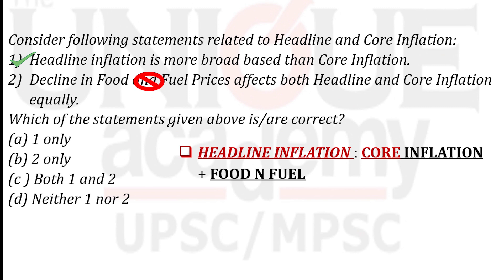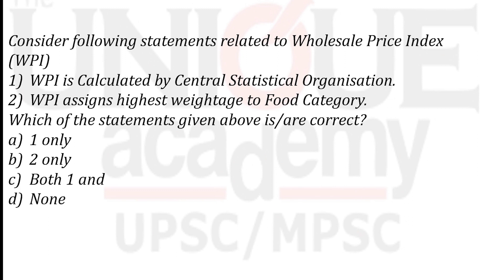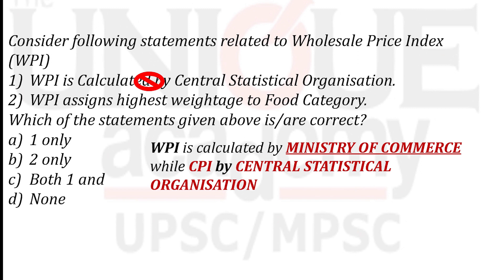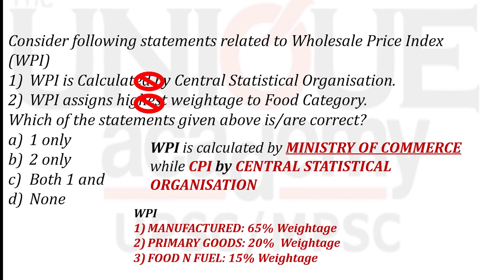Second question is about WPI. Statement 1: 'WPI is calculated by the CSO.' This is incorrect — WPI is calculated by the Ministry of Commerce, while CPI is calculated by the CSO. Statement 2: 'WPI assigns the highest weightage to food categories.' This is also incorrect — WPI gives the highest weightage (65%) to manufactured goods, then primary goods (20%), and fuel and power (15%). Food has the highest weightage in CPI, not WPI. Both statements are incorrect, so the answer is D — none.